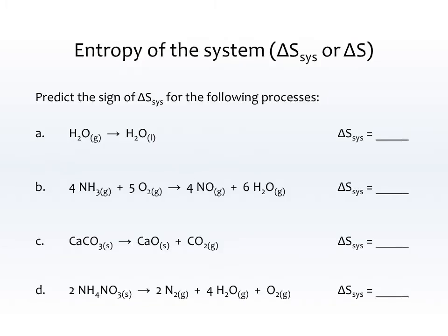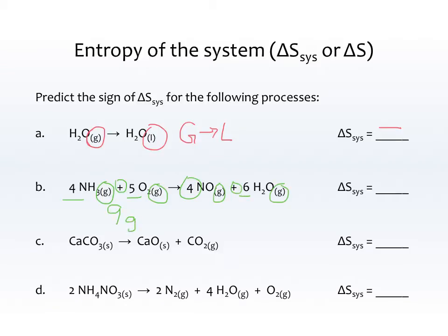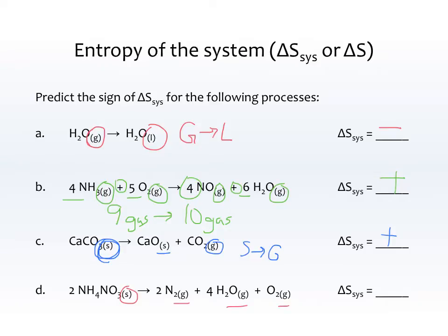Let's predict the sign of delta S for the system. Water gas turning into water liquid: a gas changing to a liquid becomes more organized, so S of the system is negative. For four gases plus five gases making four gases plus six gases — nine gases on the left, ten on the right — we've increased gaseous particles, so delta S of the system is positive. For CaCO3 solid turning into a solid and a gas, delta S increases. And a solid turning into multiple gases increases delta S extensively.